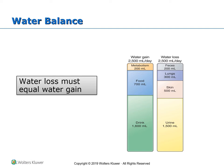In addition, about 200 milliliters are produced as a result of body metabolism — when carbohydrates are burned by cells to produce energy, one of the main byproducts is water. This water is described as metabolic water. All together, total water gain is about 2,500 milliliters per day.